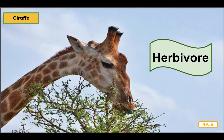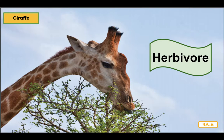Grass is not the only important source of food in the savannah. Many animals get their meals from the acacia tree. Giraffes, with their long necks and tongues, are able to eat twigs and leaves from the top of the acacia. Not only are giraffes' tongues long, they are also very tough. That is a good thing, too, because the twigs of the acacia tree are covered with sharp thorns that the giraffes eat along with the twigs and leaves. Giraffes are also herbivores — they only eat plants.